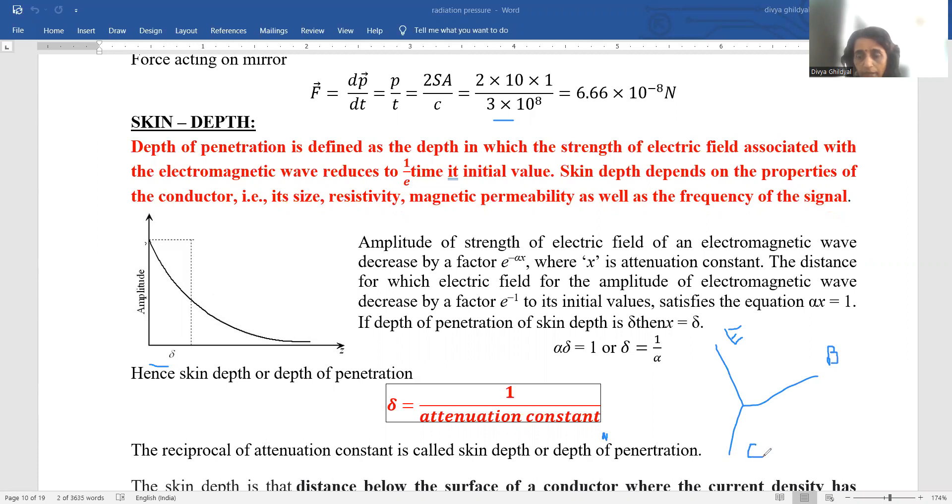So see when an electromagnetic wave which by now we have understood is carrying pressure, radiation pressure and momentum along with it. When this is falling on a surface, then how much penetration, depth of penetration it undergoes is dependent in which the strength of electric field associated with electromagnetic field is reducing to 1 upon e times its initial value is known as skin depth.